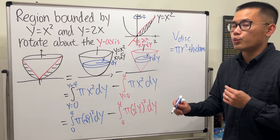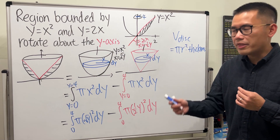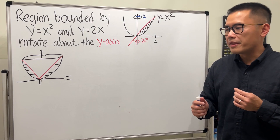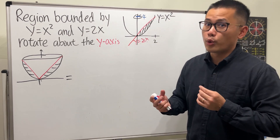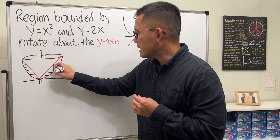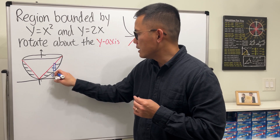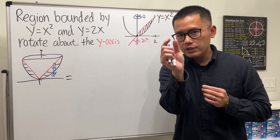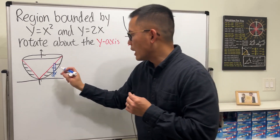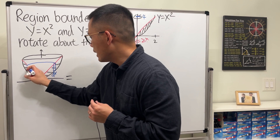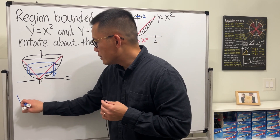Now, how do we do this with the shell method? The advantage here is that we're rotating vertically, so imagine a roll of toilet paper. We make a vertical cut — the thickness is dx, a small change in x — and then we rotate it to get a shell.